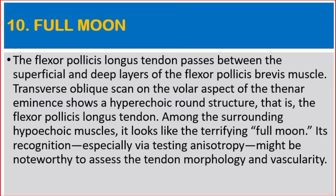Number ten: full moon. The flexor pollicis longus tendon passes between the superficial and deep layers of the flexor pollicis brevis muscle. Transverse oblique scan on the volar aspect of the thenar eminence shows a hyperechoic round structure — the flexor pollicis longus tendon — among the surrounding hypoechoic muscles. It looks like the full moon. Its recognition might be noteworthy to assess the tendon morphology and vascularity.